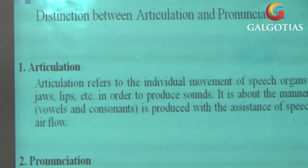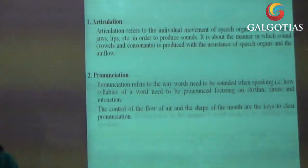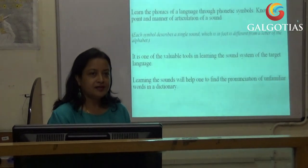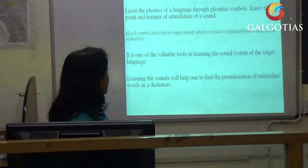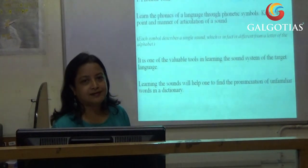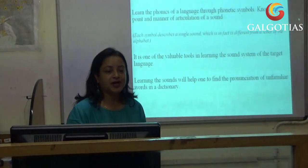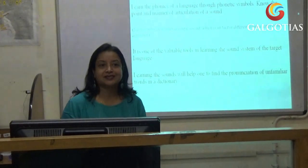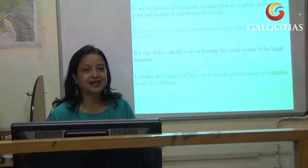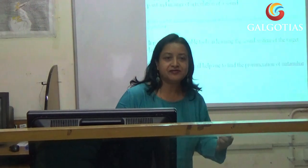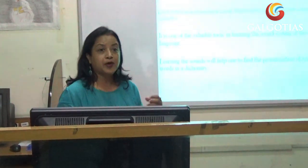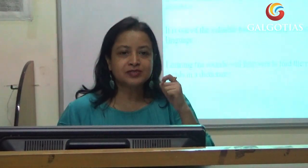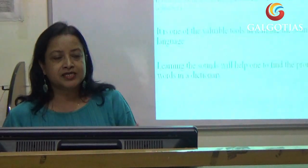The control of the flow of air and the shape of the mouth are the keys to clear pronunciation. The first method to improve articulation is phonetic training. Learn the phonics of language through phonetic symbols. Every language has a specific set of vowels and consonants. Note the point — where the articulators come to play to produce a sound and the manner in which it is produced.